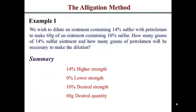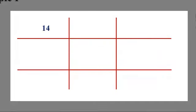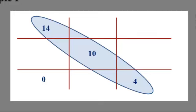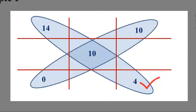Let's put these numbers in the grid. Top left gets 14, because that's our higher strength. Bottom left gets 0, because petrolatum has no sulfur. Our desired strength of 10% goes in the middle. Now, the number going to the bottom right is 14 minus 10, which gives us 4 — meaning we need 4 parts of petrolatum. The number going to the top right is 10 minus 0, which gives us 10 — meaning we have 10 parts of the 14% sulfur ointment.